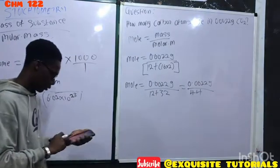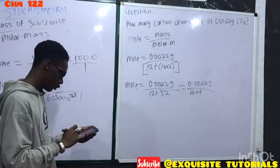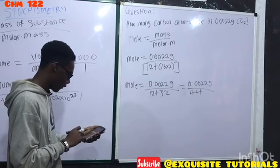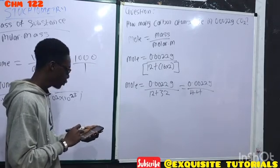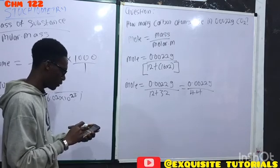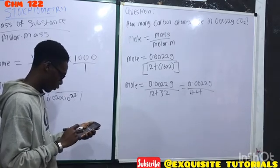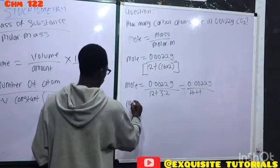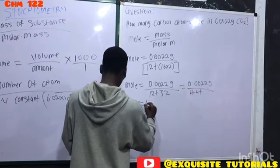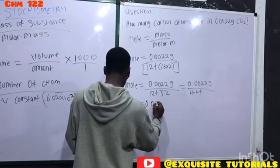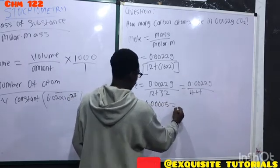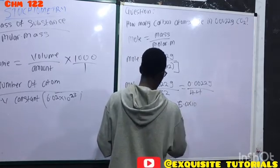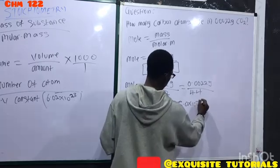0.0022 divided by 44—the mole is approximately 0.000005. In scientific notation, it's 5.0 × 10⁻⁵. This is the number of moles.